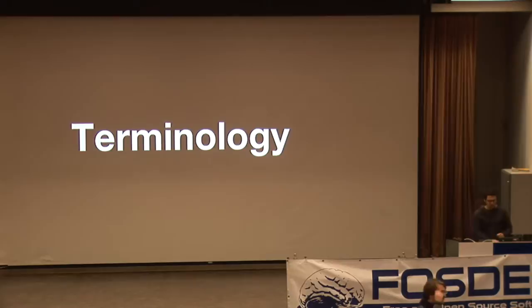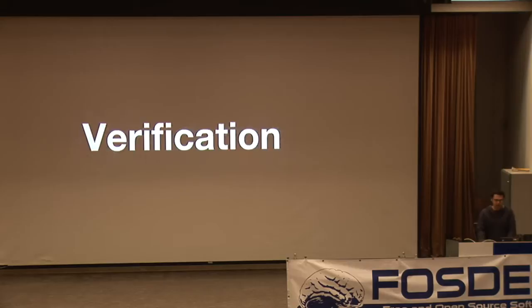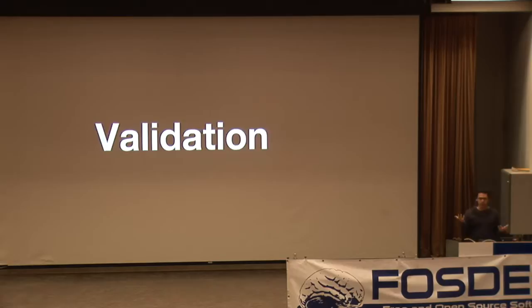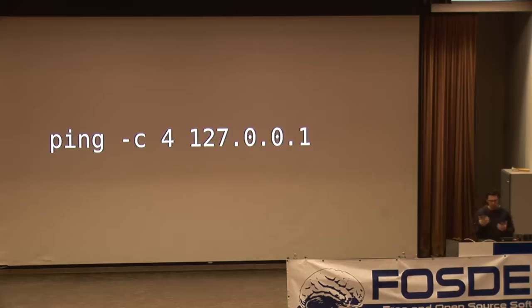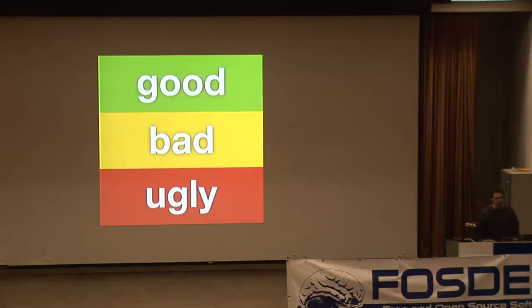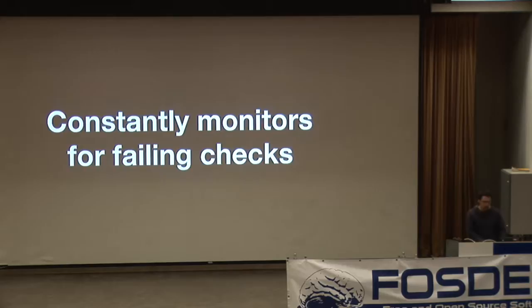We're going to talk about the concept of a check. A check's purpose is to perform some sort of verification or validation that something is working the way that you expect it to. Developers also know these things as unit tests. This is an example check — it's very simple, we're just pinging four times. Generally what happens at the end is it will return good, bad, or ugly — whether what you were testing was within the parameters you were expecting.